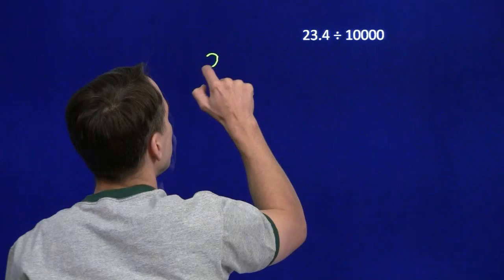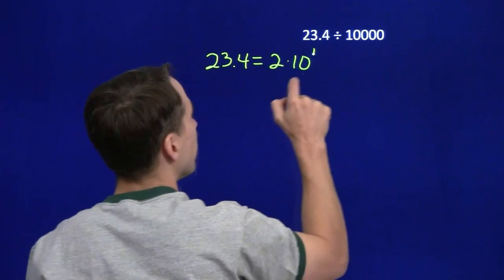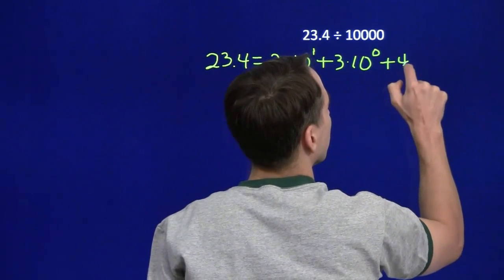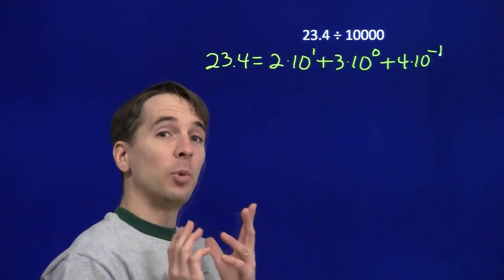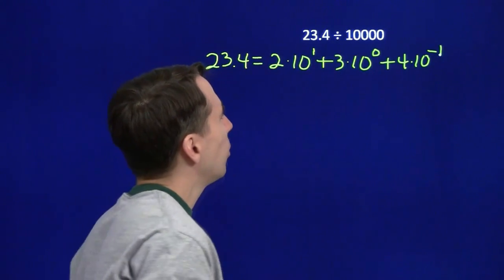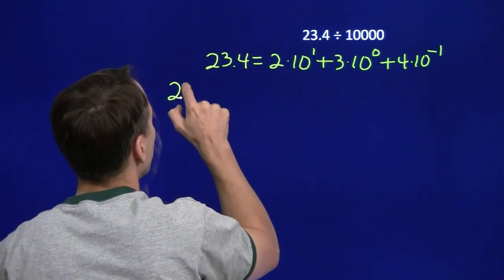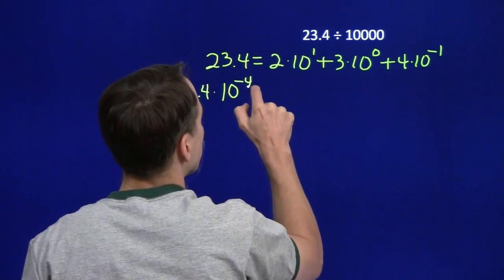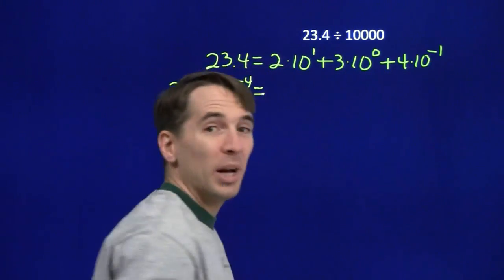Now that we can handle multiplication, we'll move on to division. Once again we'll look at the place values of 23.4: the 2 is in the tens place, 2 times 10 to the first; the 3 is in the ones place, 3 times 10 to the 0; and the 4 is in the tenths place, 4 times 10 to the minus 1. The tricky part: dividing by 10,000 is the same thing as multiplying by the reciprocal of 10,000. Well, 10,000 is 10 to the fourth, so the reciprocal is 10 to the negative fourth — dividing by 10 to the fourth is the same as multiplying by 10 to the minus 4.